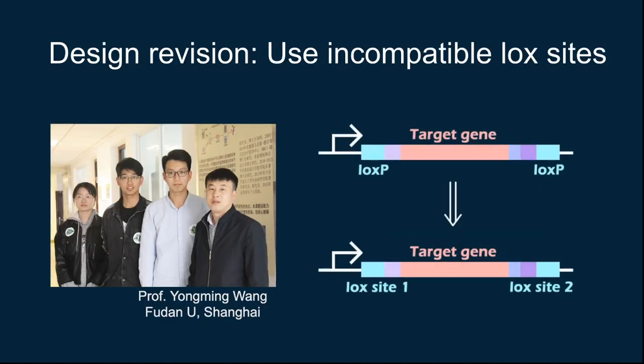In our original design, we used two same loxP sites on both ends of the target sequence, but after consulting Professor Wang, whose work focused on gene editing, we realized the problem. The same loxP sites would be excised by Cre at a much higher efficiency than the recombination process. Therefore, the most likely outcome of the original system would be plasmid without any target sequence. To solve this problem, we changed the design into incompatible lox sites. For example, the lox sites 1 and 2 here would only pair respectively with the same ones, but not with each other. In this way, the excision activity would be eliminated.